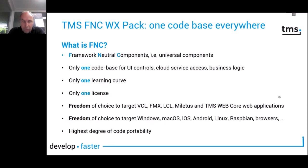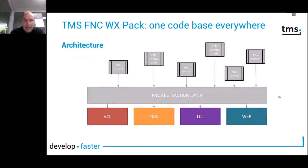You have full freedom to choose what you target with these components — not only with respect to the framework but also the operating system. Here you see the list of all possible operating systems where FNC components can run. We achieve FNC through a universal component architecture: we built an abstraction layer on top of existing frameworks — VCL, FMX, LCL, and Web Core — and code our components against this FNC abstraction layer.